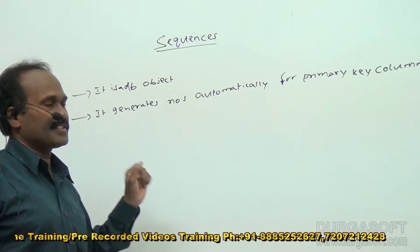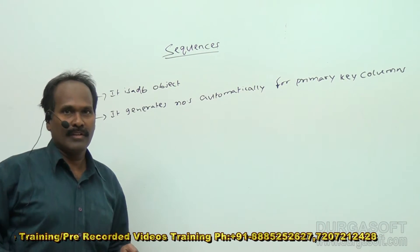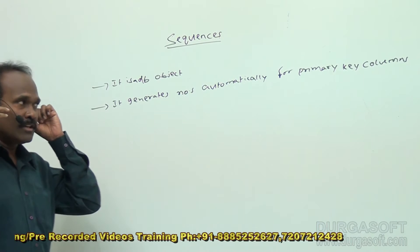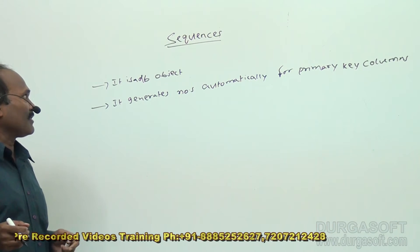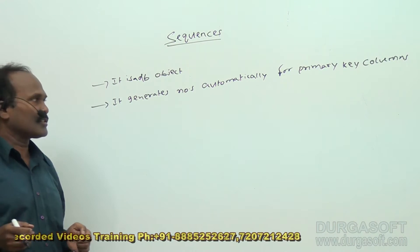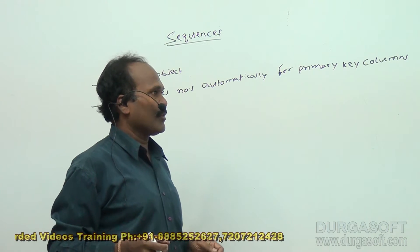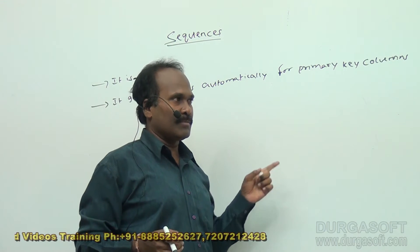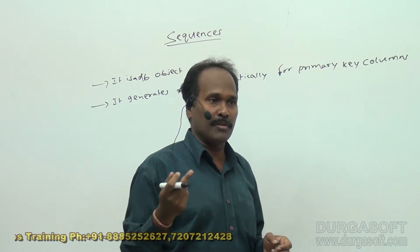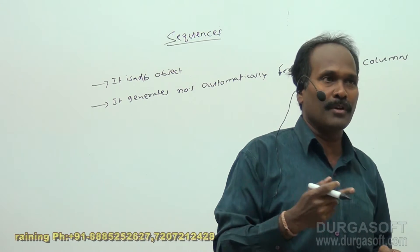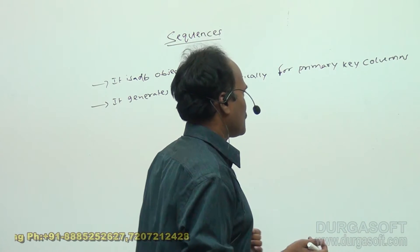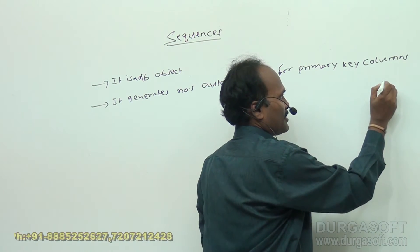The next topic I will discuss is sequences. A sequence is nothing but a database object. The purpose of a sequence is to auto-generate numbers for primary key columns. The database object sequence is very useful when you want to generate unique numbers automatically. Just consider a small example.